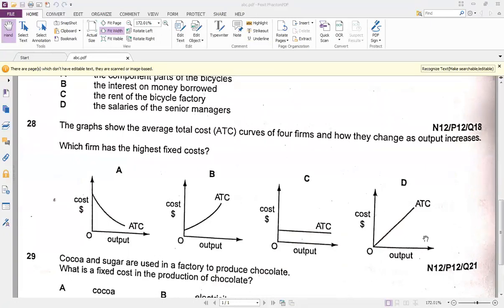If we just see diagram B, it shows that the average cost is starting from above. This means that the more output is produced, the more average total cost is there, and if we add fixed cost in it, this shows that the fixed cost is also high in this way. So this is going to be the answer for you.